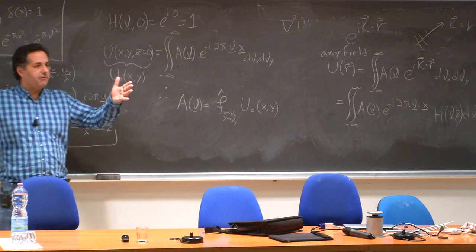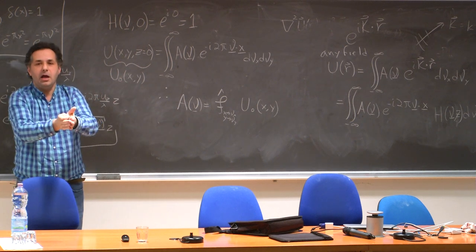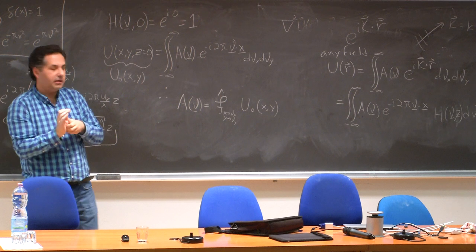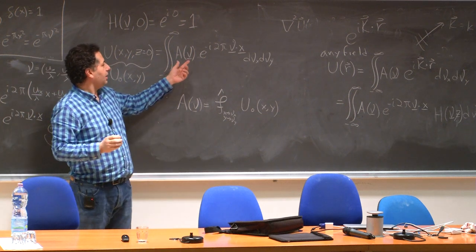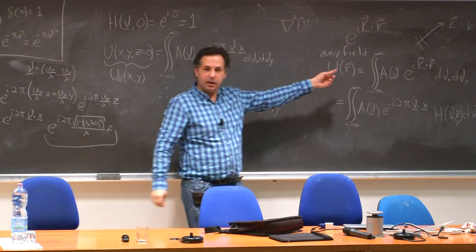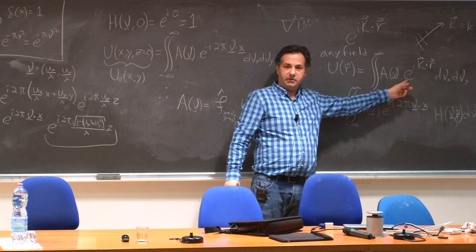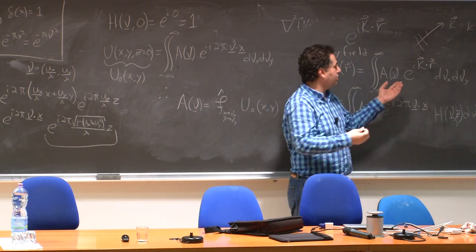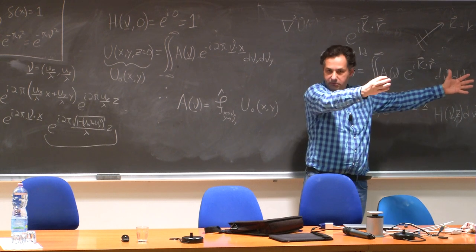So if I have a field and I know what it is at the initial plane, I Fourier transform that, and that tells me what the weight of the plane waves is. From there, to propagate, I just let these plane waves travel.